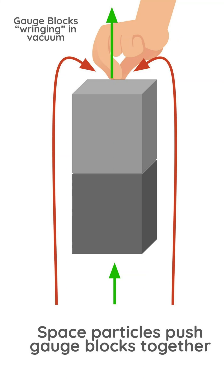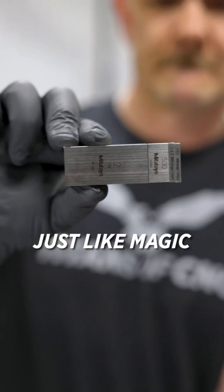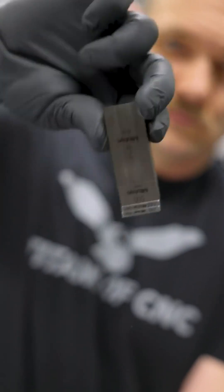This levitation manifests as reverse gravity, as seen in gecko feet and gauge blocks that negate the downward pushing force by matching the surface of the ceiling or the other gauge block.